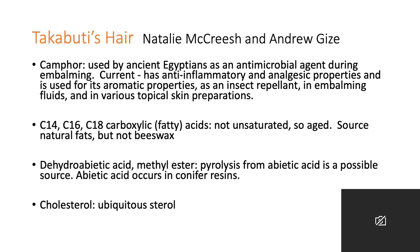We have the fatty acids there. These are fully saturated with hydrogen — not unsaturated. If they were recently made by organisms they would have a shortage of hydrogen, so the interpretation is these fats are old — it could be added at the time of mummification or any time later. A special one we have is a derivative of conifer resins: dehydroabietic acid. That could have come from incense or from pitch coating the coffin. And then we have cholesterol, which is a ubiquitous sterol.